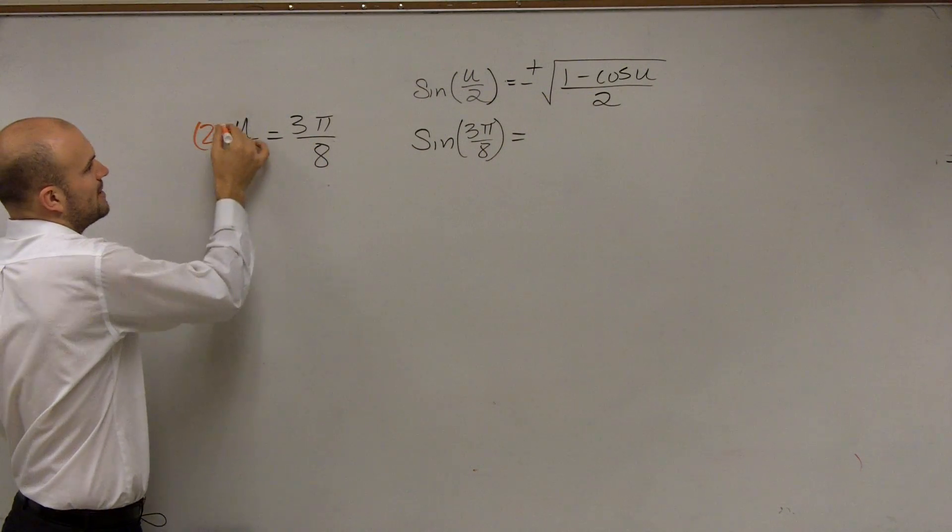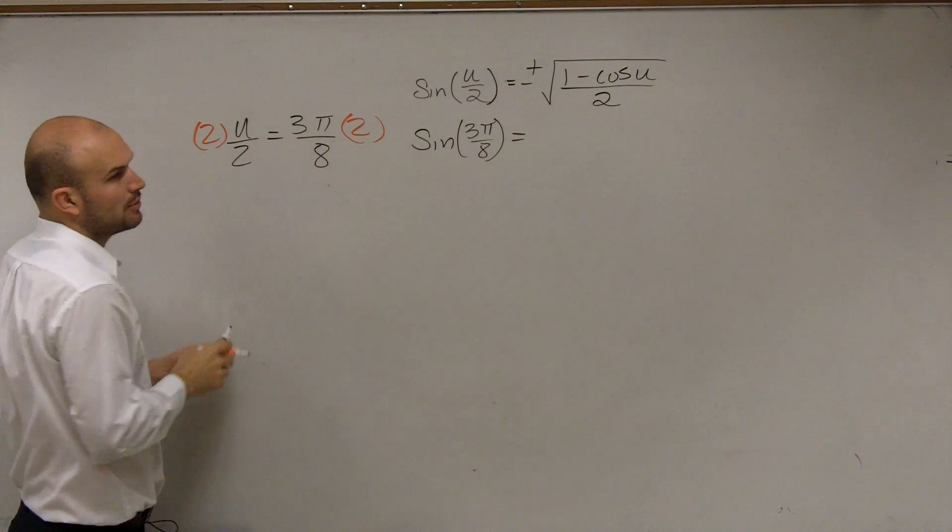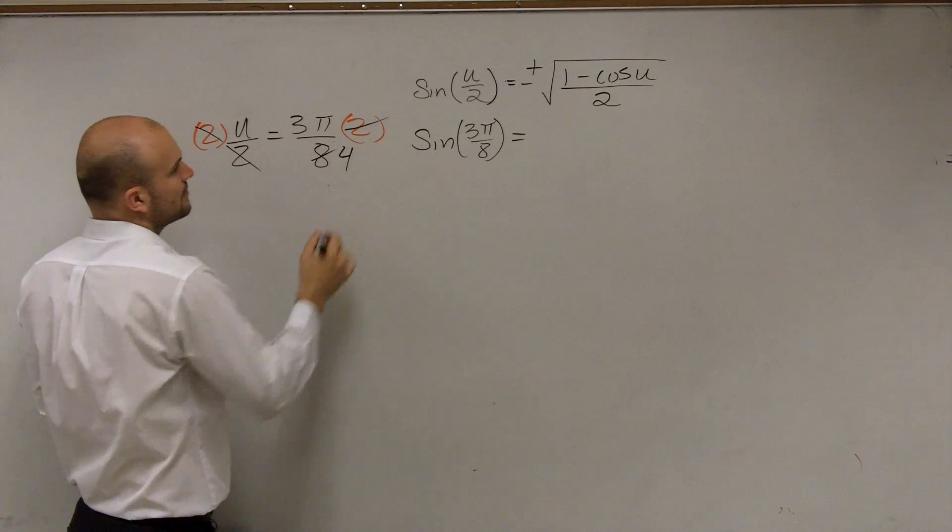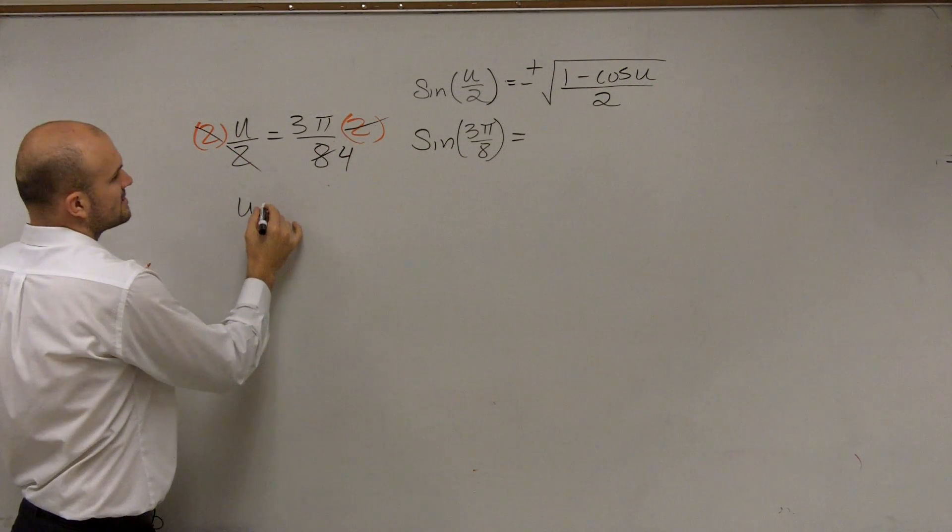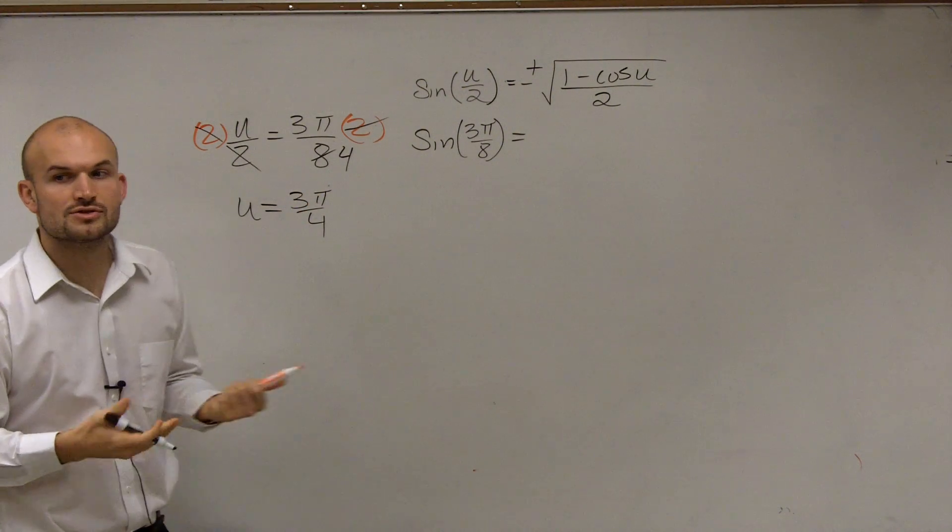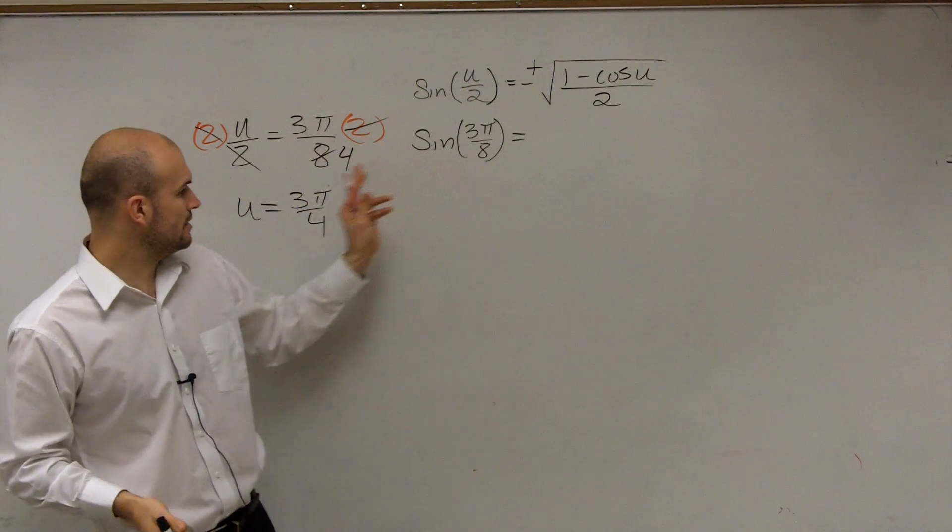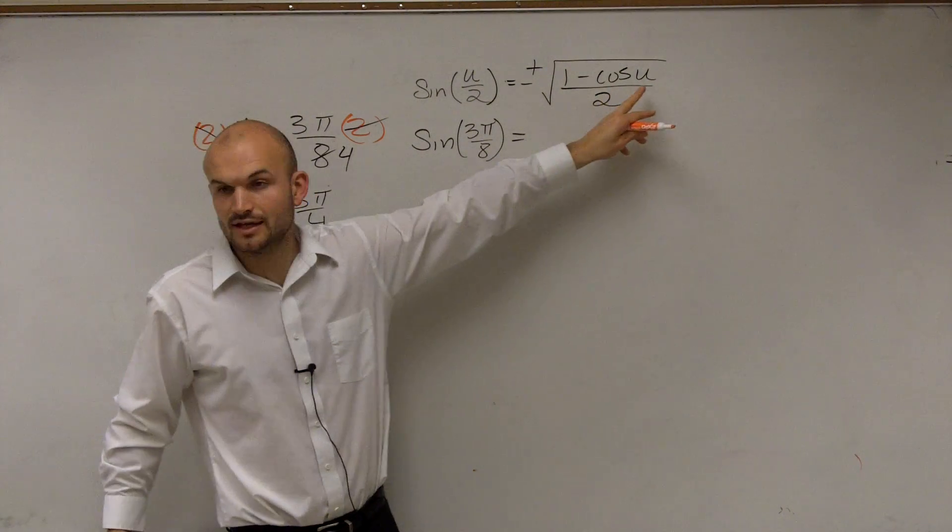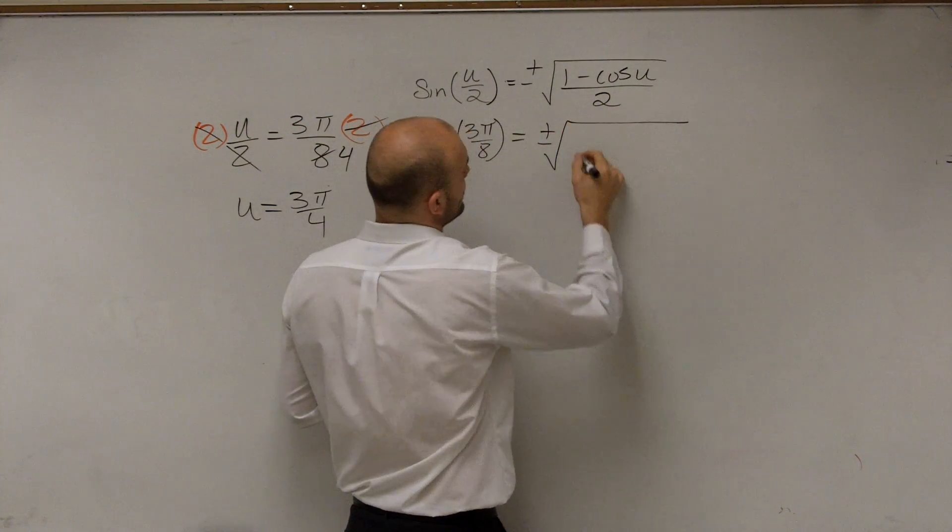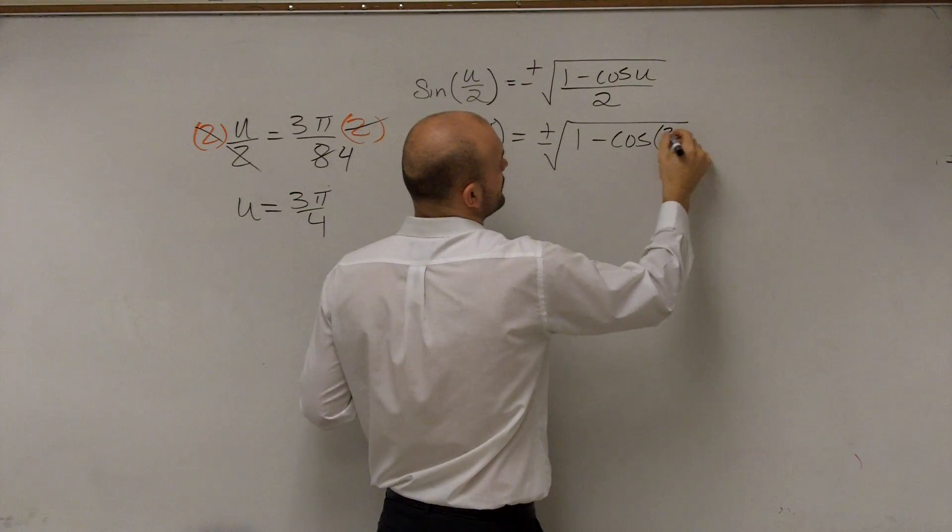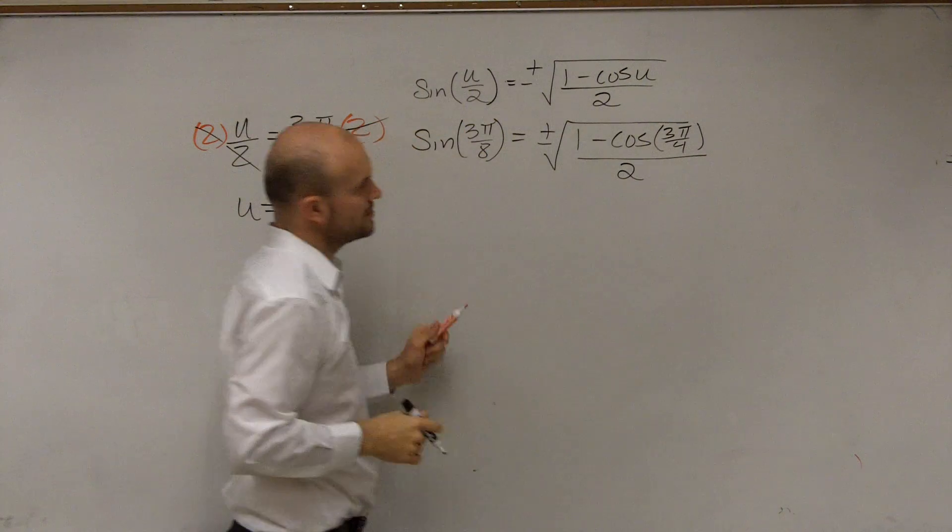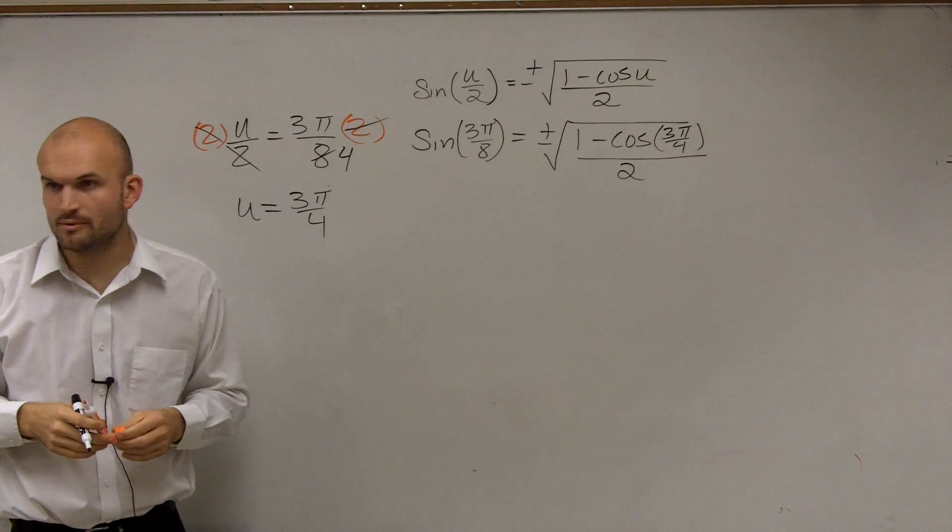Well, to do that, we multiply by 2 on both sides. Those divide out to 1. This reduces down to over 4. So therefore, I say u equals 3π over 4. So now what I can do is I can plug 3π over 4 in for my u. So therefore, I write plus or minus the square root of 1 minus cosine of 3π over 4 divided by 2. Is everybody following with that?